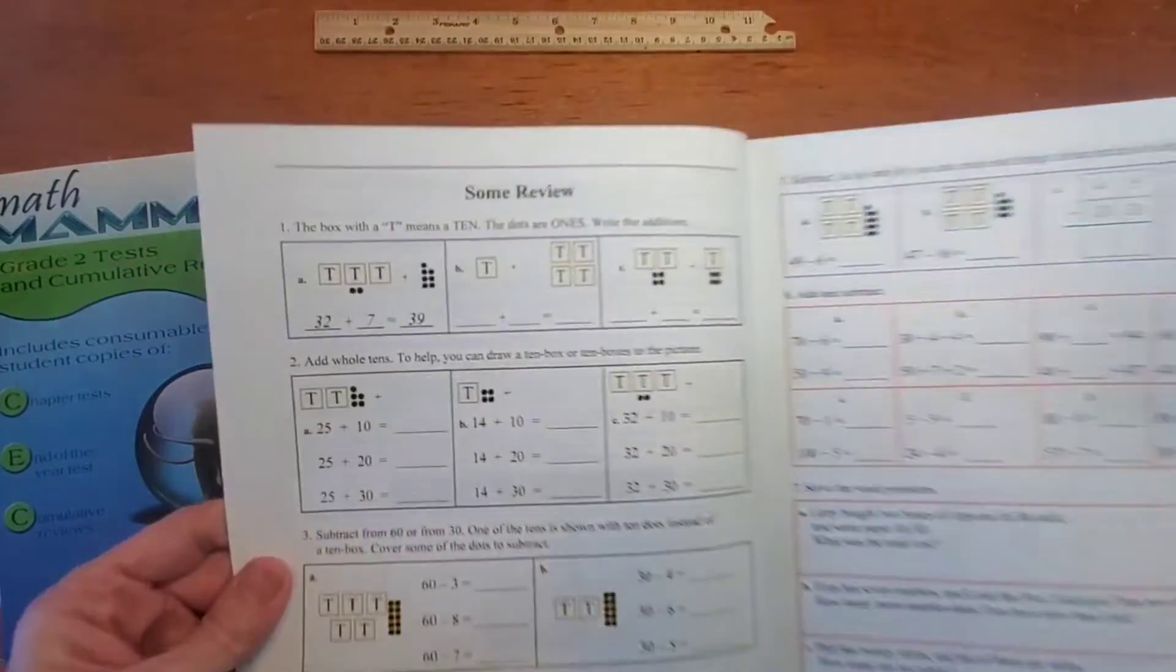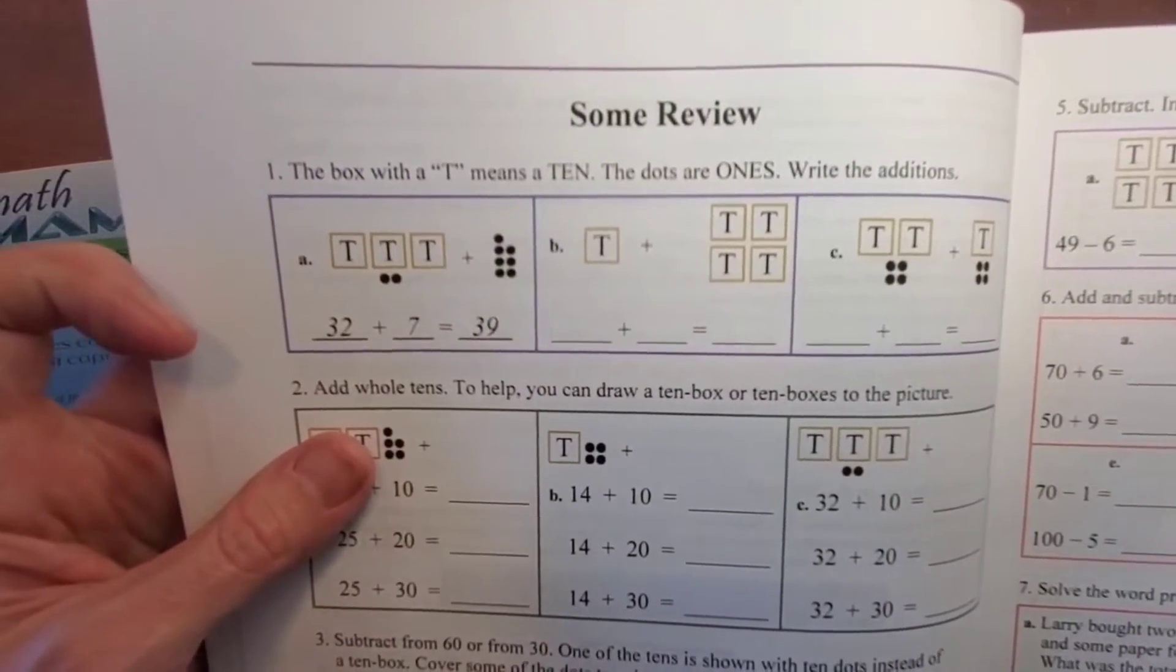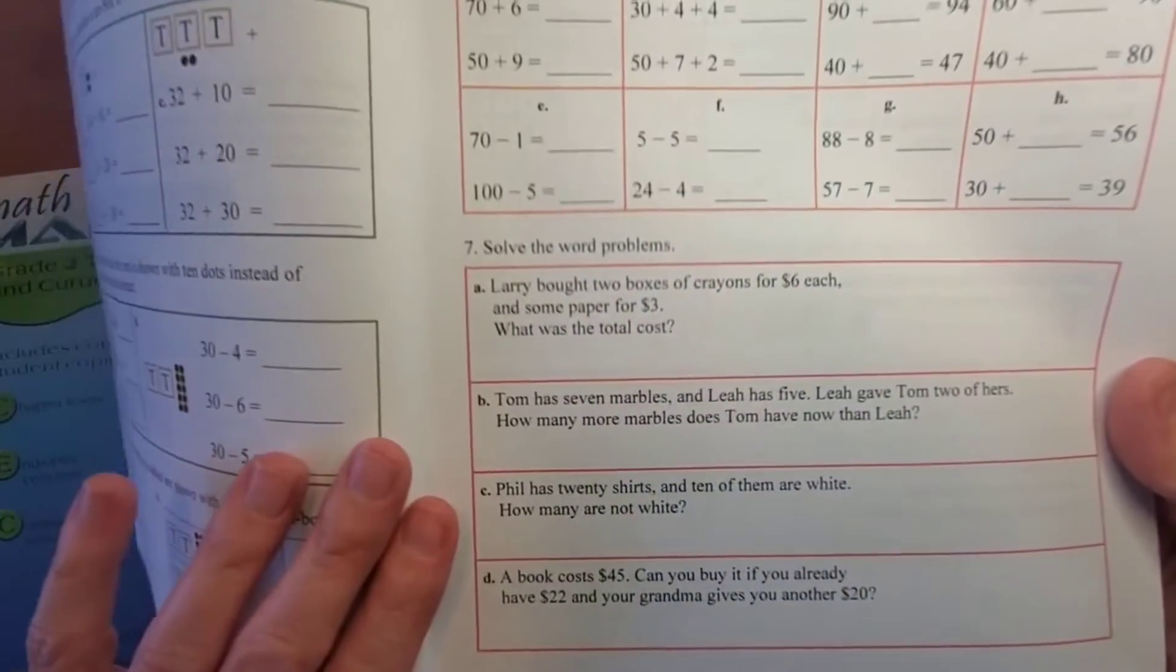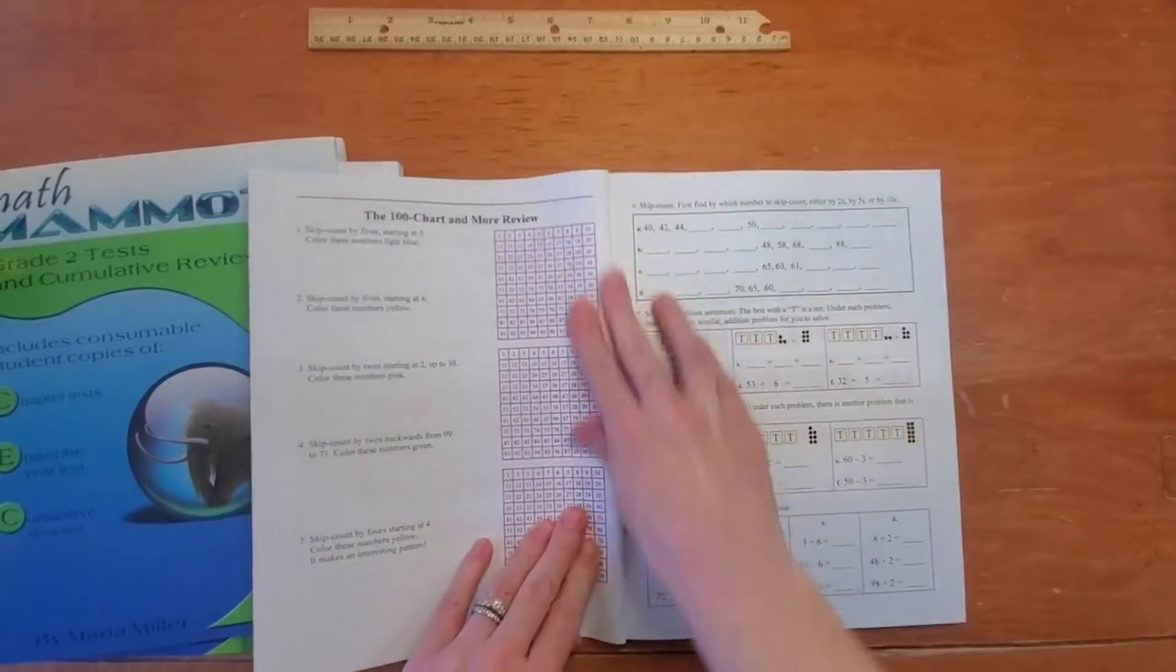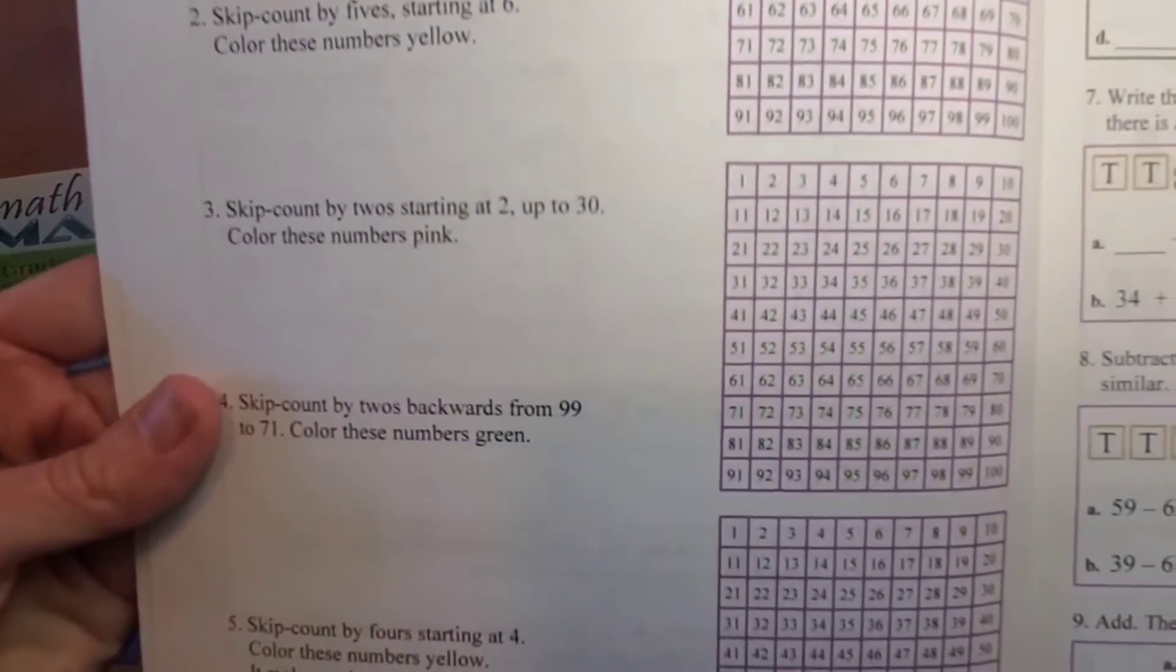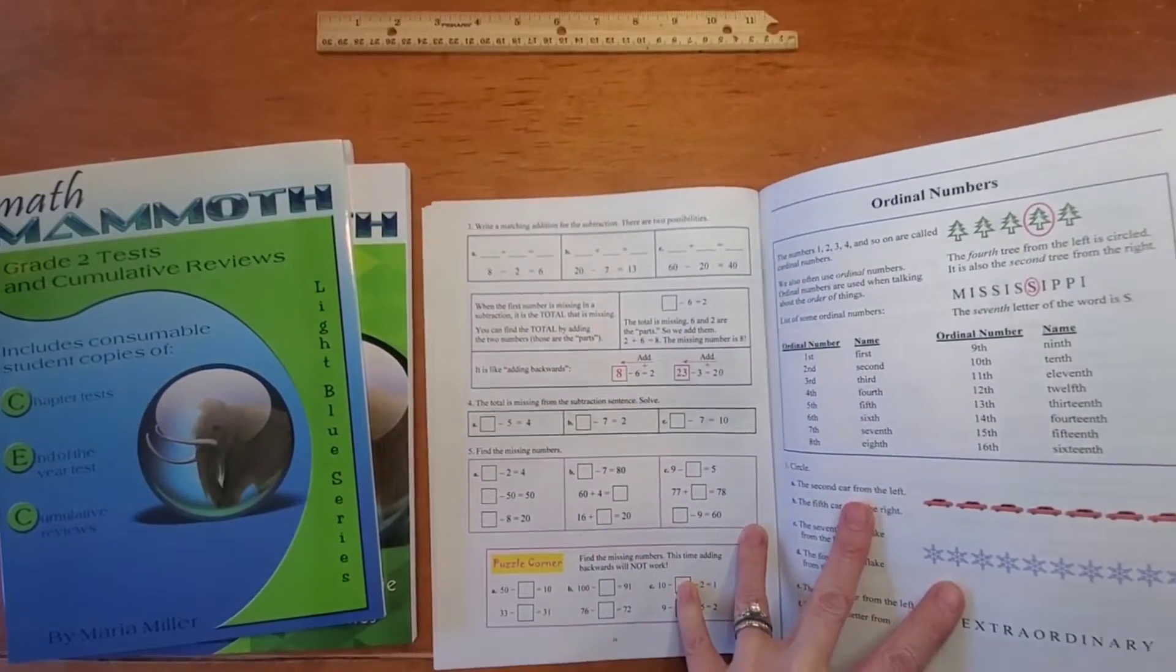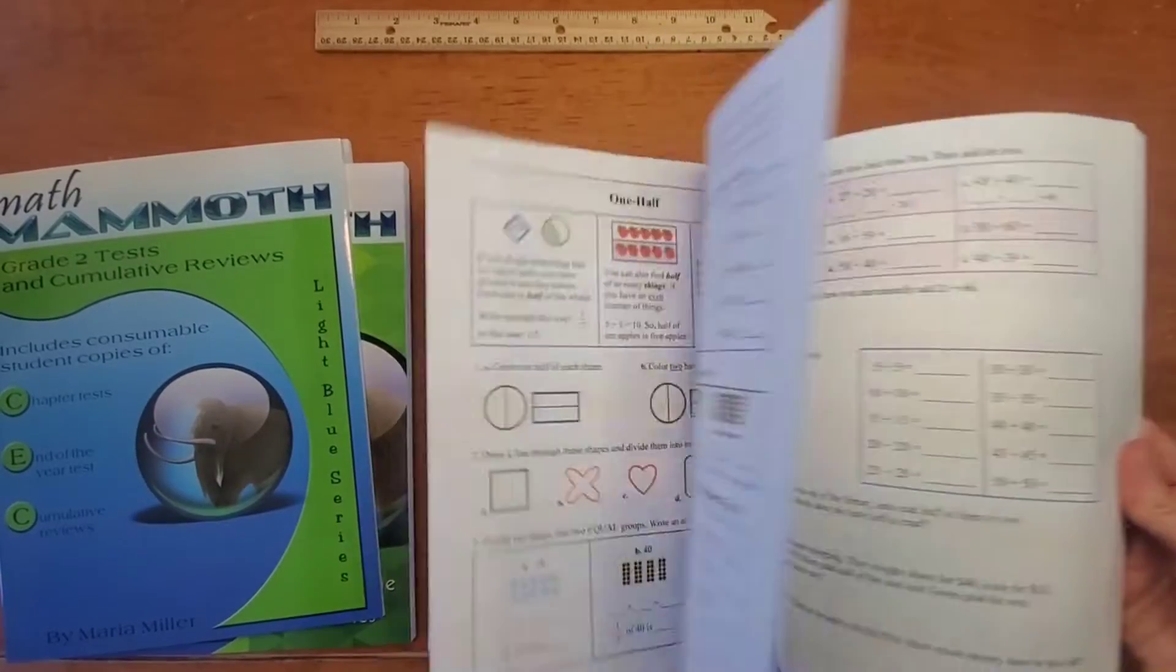I like how everything is visual. We do have the color version here. The t's would represent tens, the dots would represent ones. So here we have 32 plus 7. The child can count it up. There are lots of word problems built in as well. Here they're skip counting and then they'll color in the hundreds chart as they skip count, which is great. Then they can see the patterns. So there are lots of visual things included, lots of really having a good number sense.